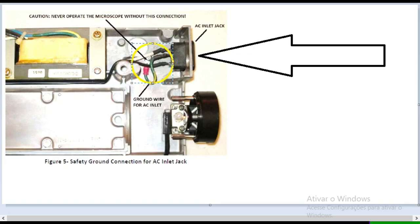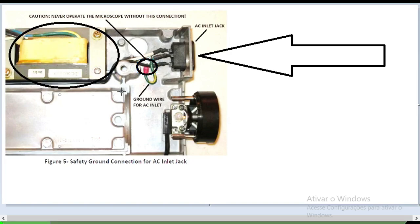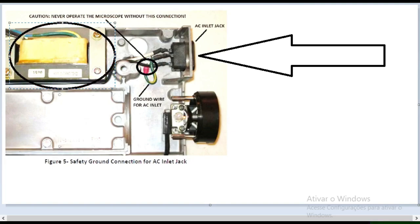Neste local aqui é onde é feito o aterramento. Nesta posição em vermelho, este fiozinho com a capa vermelha, este aqui é o terceiro fio ou fio de proteção, o fio terra. Neste lado aqui nós temos o transformador. Ele pega a energia alta 127 volts ou 220 e a reduz para a necessidade do microscópio.